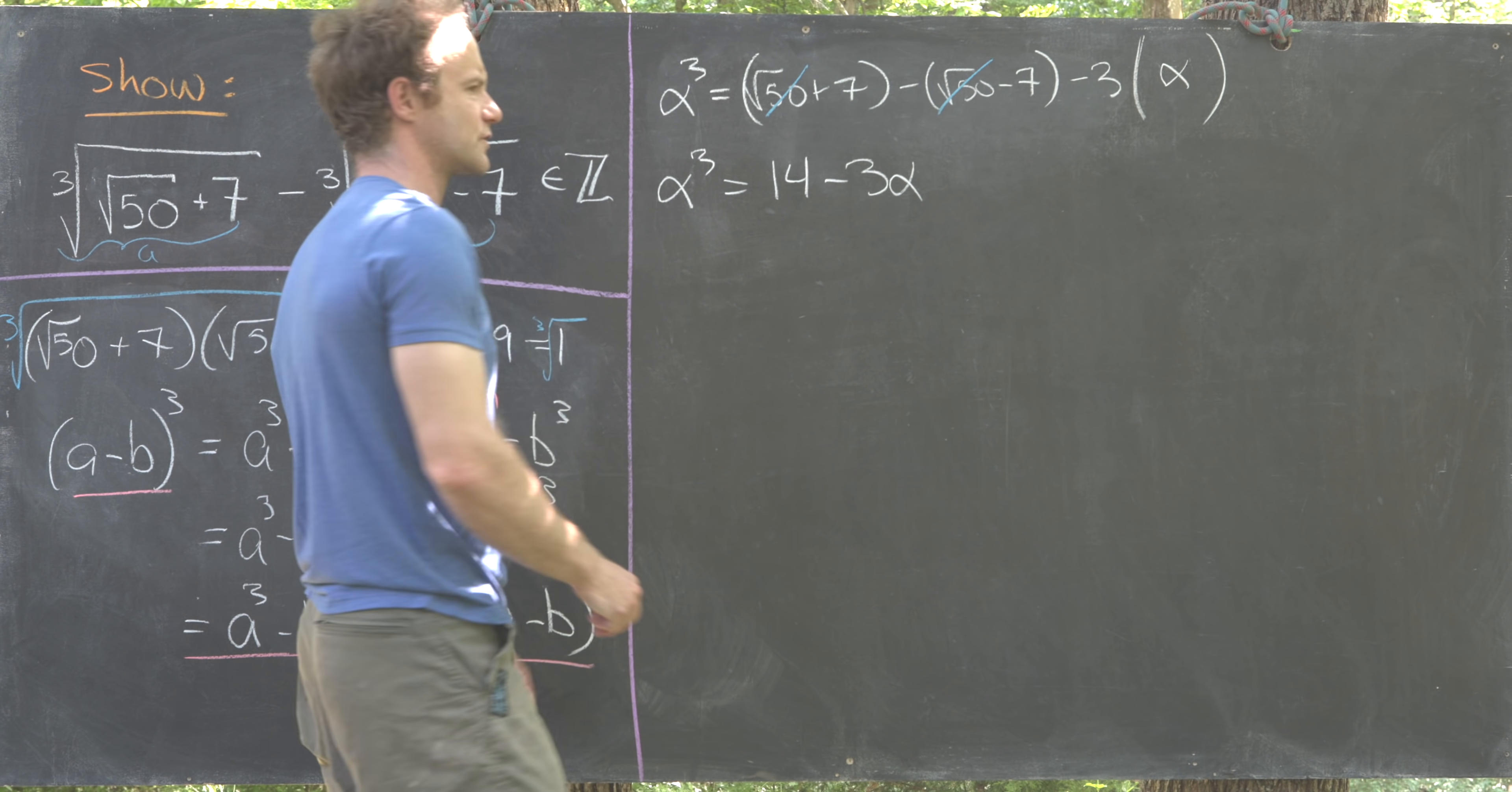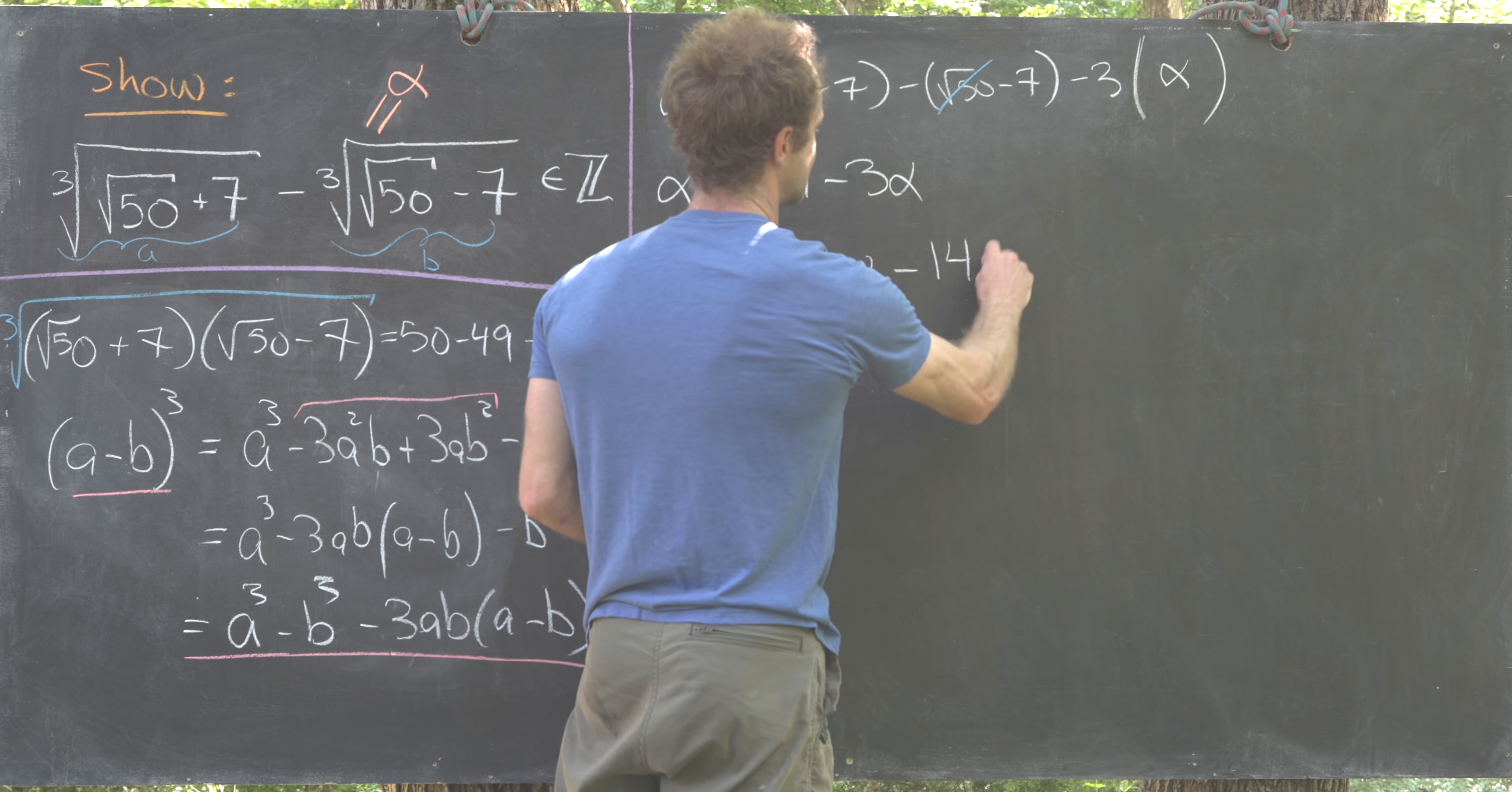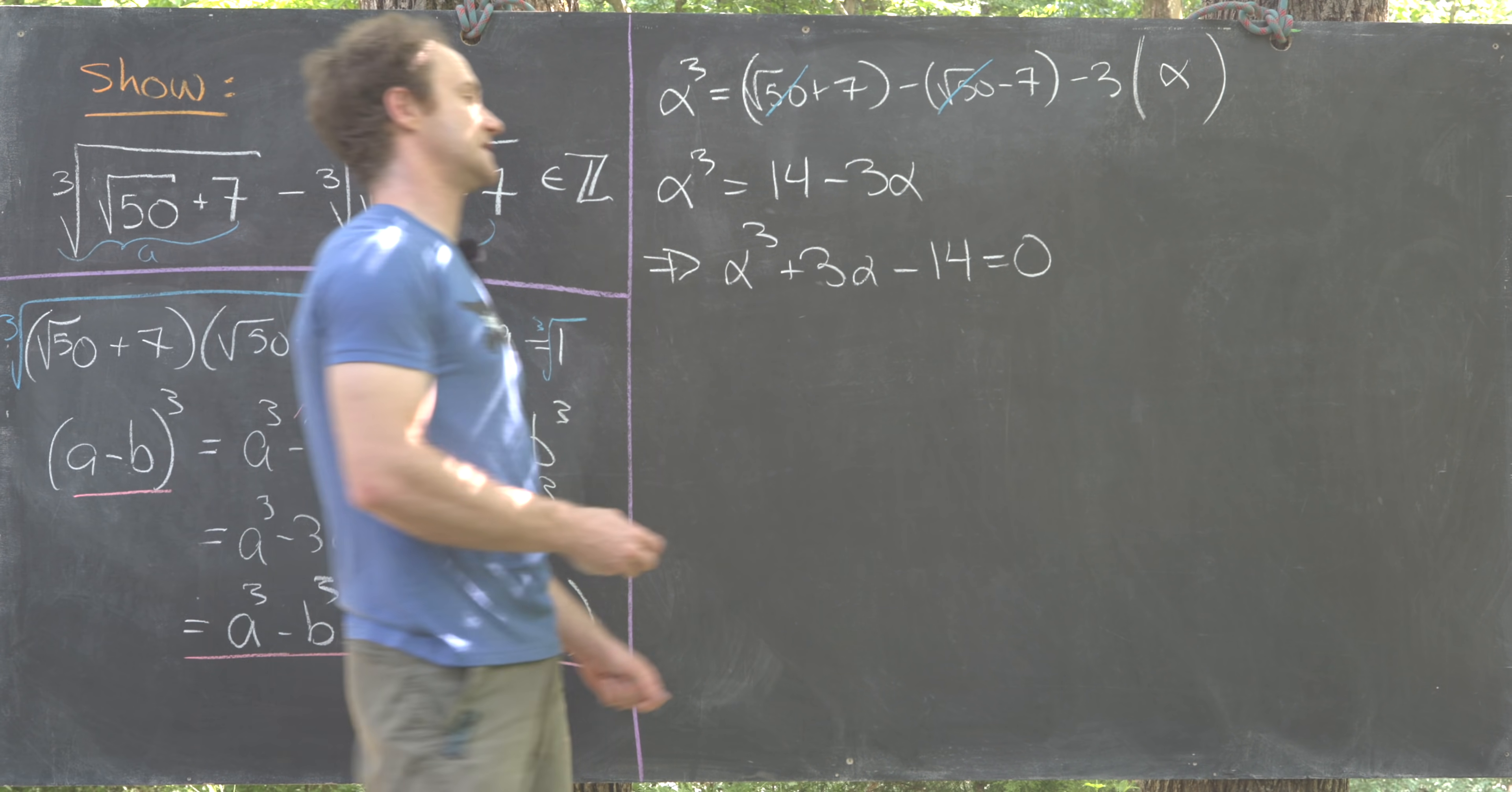Then we'd probably like to write this so that we could find the root of a polynomial, in other words move everything to one side of the equation. That's going to be equivalent to alpha cubed plus 3 alpha minus 14 equals 0. Since our goal is to show that alpha is an integer, that means it's a rational number, so we can use the rational root theorem.